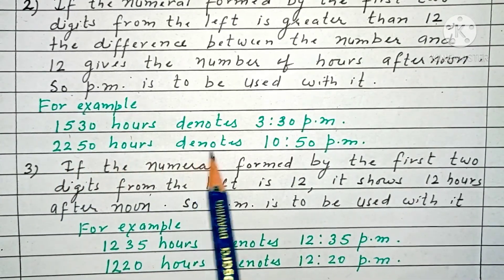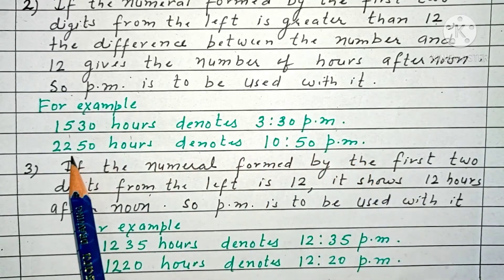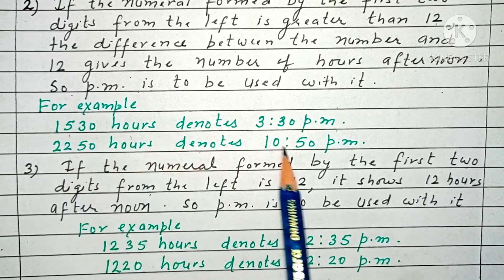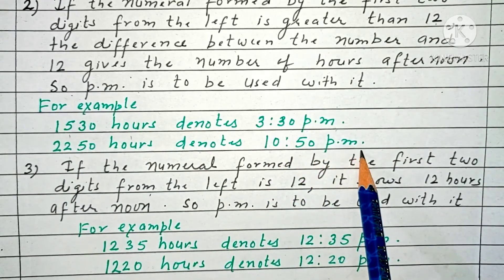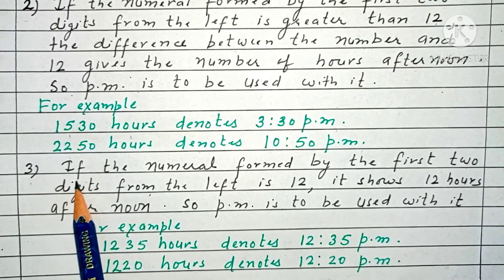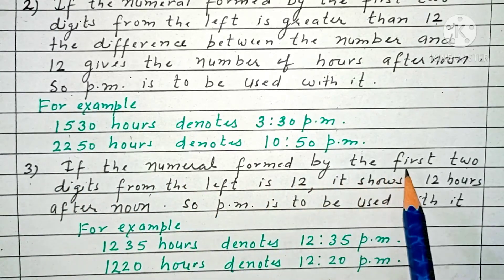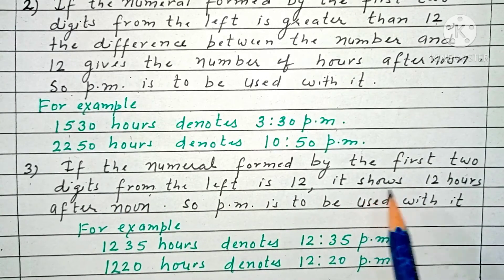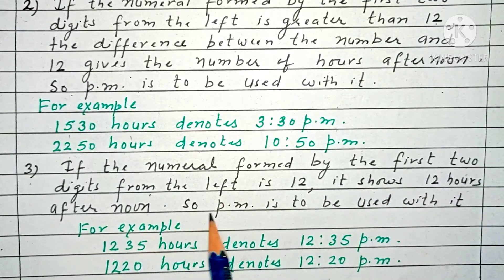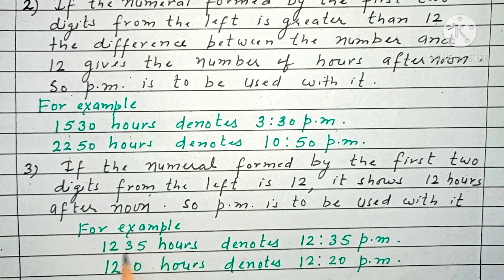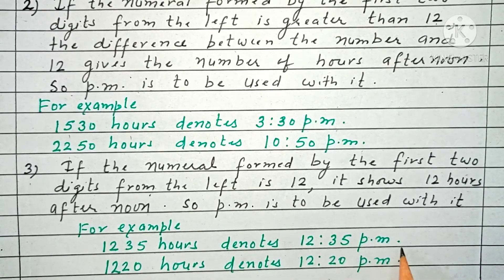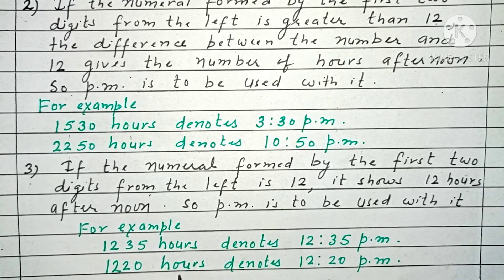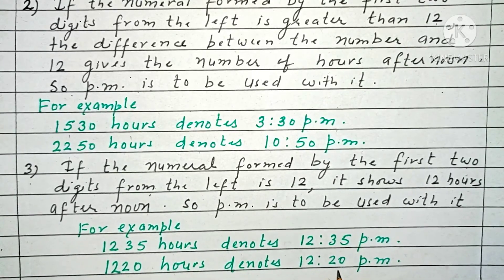2250 hours: 22 minus 12 is 10, so it is 10:50 PM. Rule 3: if the numeral formed by the first two digits from the left is 12, it shows 12 hours afternoon, so PM is to be used with it. For example, 1235 hours denotes 12:35 PM, and 1220 hours denotes 12:20 PM.